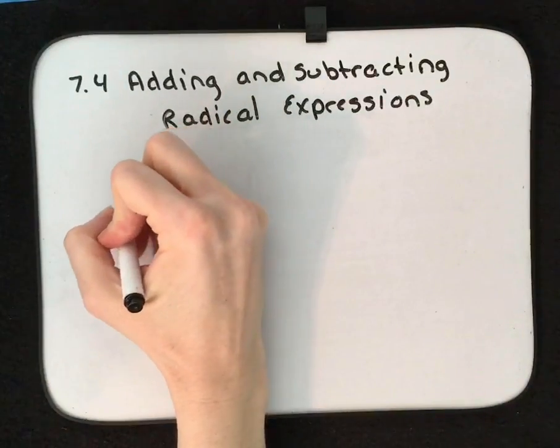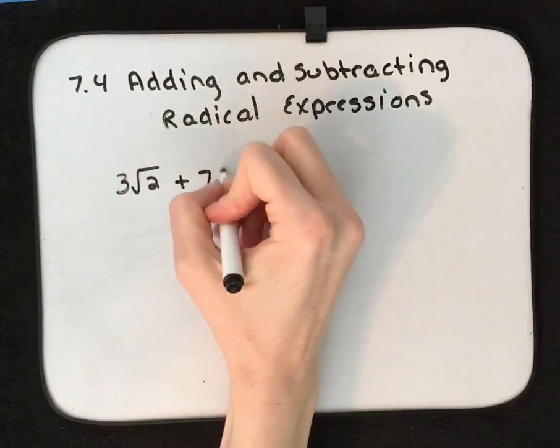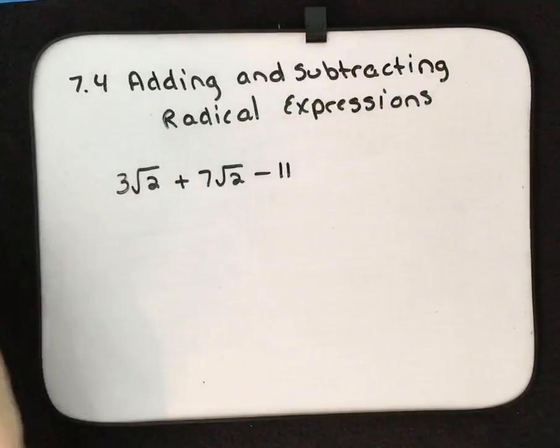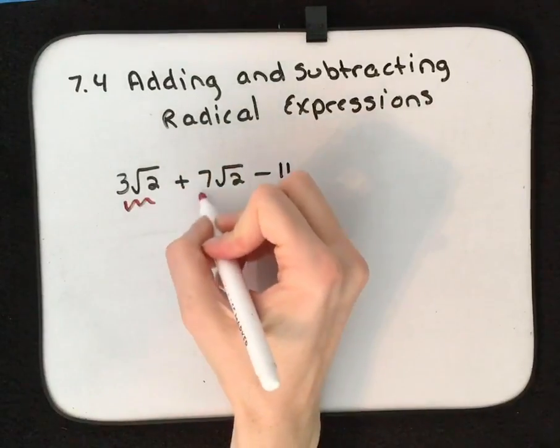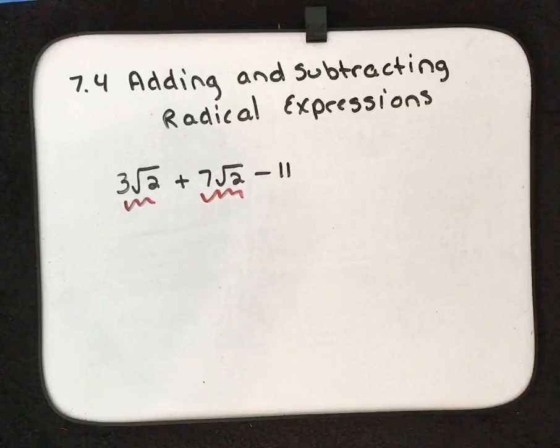For example, if we have 3√2 + 7√2 - 11, we have to look at our like terms. √2, √2—those are like terms, like pieces.